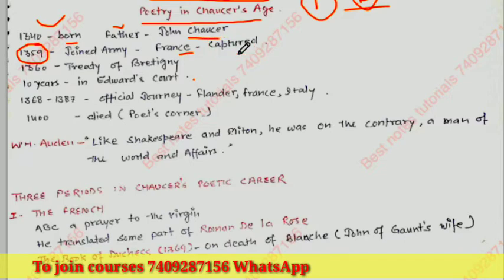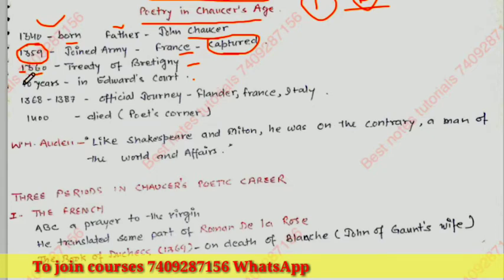In 1360 there was the Treaty of Bretigny, and because of that treaty he was released. After that, he spent ten years in Edward's court. I told you a shortcut for this — it was ERH. Hopefully you will remember ERH from the last video.